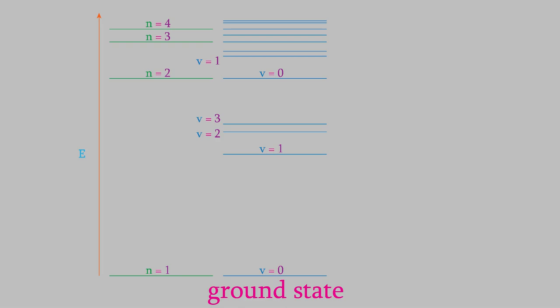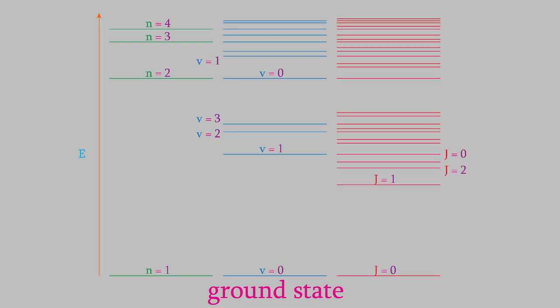Each of the vibrational levels has its own set of rotational energy levels. Just like the electronic and vibrational levels, these get closer together as we raise the energy. So when we combine the electronic, vibrational, and rotational levels, this diagram looks very messy.